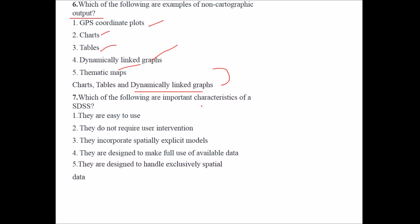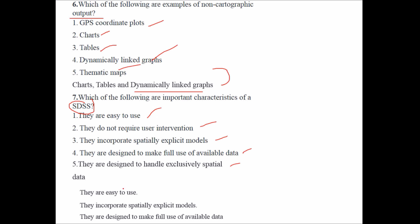Which of the following are important characteristics of SDSS? Options: easy to use; do not require user intervention; incorporate spatially explicit models; designed to make full use of available data; or designed to handle exclusively spatial data. The answers are: they are easy to use, they incorporate spatially explicit models, and they are designed to make full use of available data.